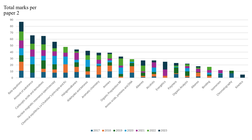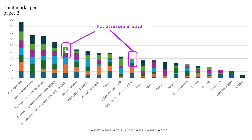This graph shows the spread of marks across different years. You can see that rate equations is consistently assessed every year with a significant number of marks, from back in 2017 shown in dark blue at the bottom through to 2023 in even darker blue at the top. The heavy hitters on the left-hand side are quite consistent. However, chemical equilibria and KC wasn't assessed on Paper 2 in 2023, which perhaps means it might come up with greater emphasis in 2024.